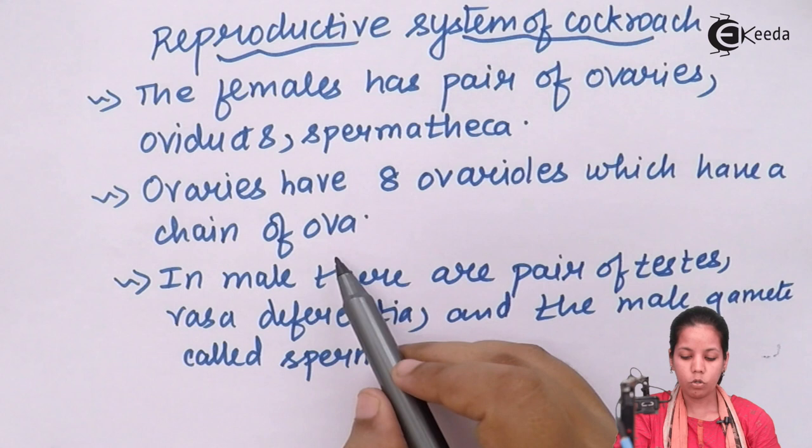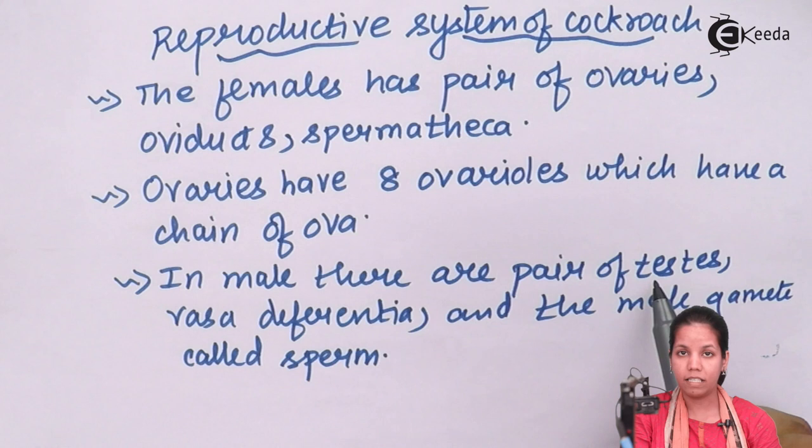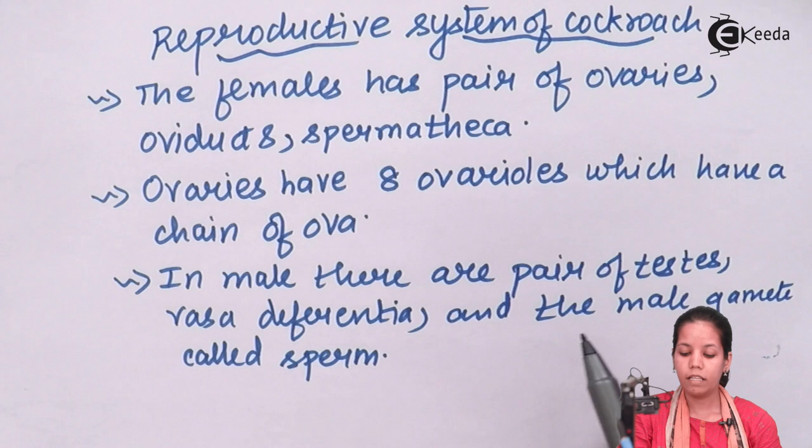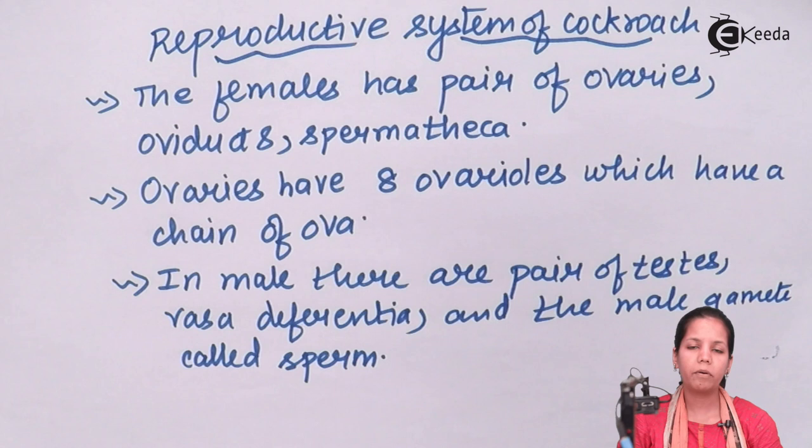Now this ova has to be mated with a male cell. In males, there are a pair of testes present. Similarly, like in human beings, there is a vasa deferentia present. The male gamete is termed as sperm. If you closely observe, students, the reproductive tract in cockroaches and in humans is kind of similar — they have ejaculatory ducts, they have a pair of testes, and gametes in two different sexes.